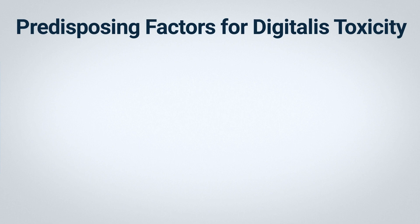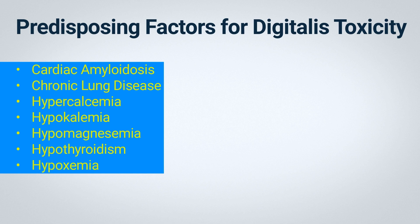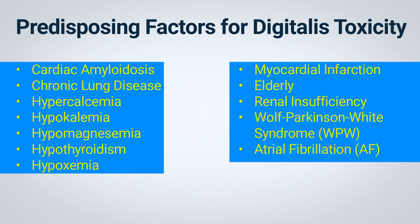These predisposing factors include patients with cardiac amyloidosis, those with chronic lung disease who have a higher propensity to develop toxicity, patients with hypercalcemia or hypokalemia, and those with hypomagnesemia. Additionally, patients with hypothyroidism, hypoxemia, those undergoing an acute myocardial infarction, the elderly, and those with renal insufficiency are also predisposed to toxicity, as these conditions can decrease digoxin clearance. Moreover, patients with atrial fibrillation and Wolff-Parkinson-White syndrome are at a higher risk for digitalis toxicity when using digitalis drugs such as digoxin.